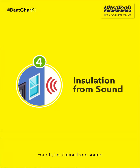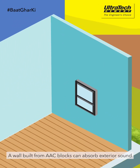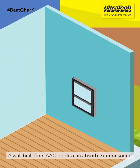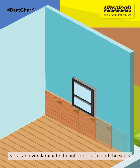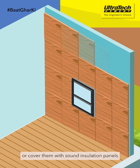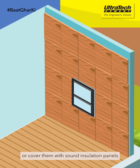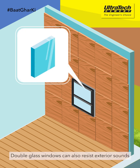Fourth, insulation from sound. A wall built from AAC blocks can absorb exterior sound. You can even laminate the interior surface of the walls or cover them with sound insulation panels. Double glass windows can also resist exterior sounds.